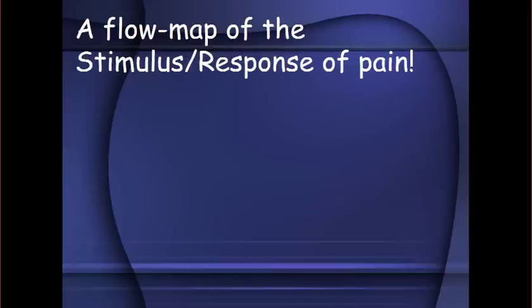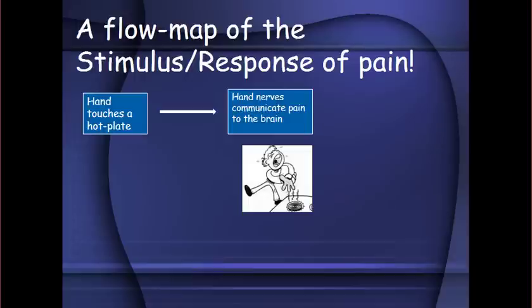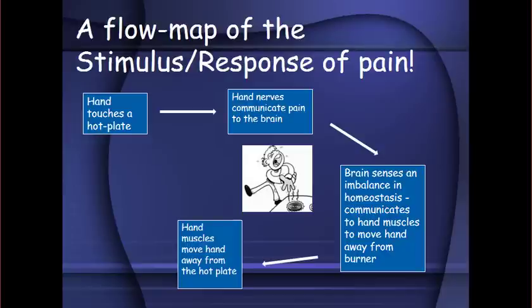Here is a flow map of the stimulus-response to pain. If your hand touches a hot plate, a signal is sent from the hand nerves to the brain. The brain senses an imbalance in homeostasis and communicates to the hand muscles to move away from the burner. The hand muscles respond by moving away from the hot plate, restoring homeostasis and returning the body to normalcy.